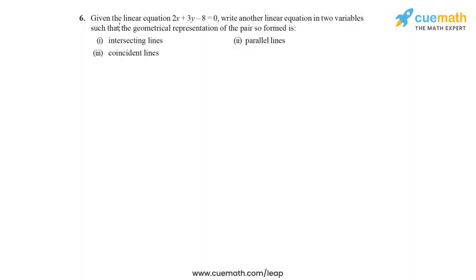Question 6 of this exercise says: given the linear equation 2x plus 3y minus 8 equal to 0, write another linear equation in two variables such that the geometrical representation of the pair so formed is intersecting lines, parallel lines, or coincident lines.